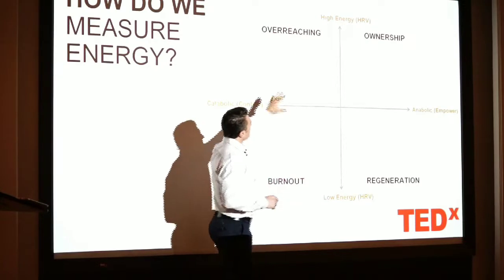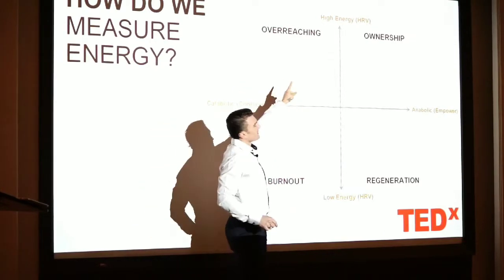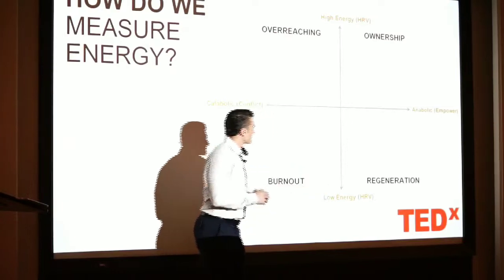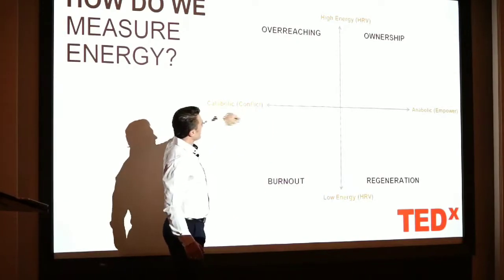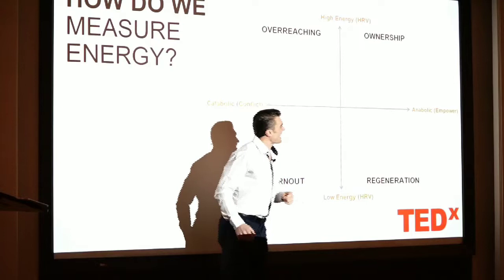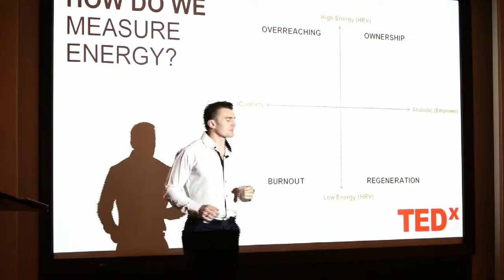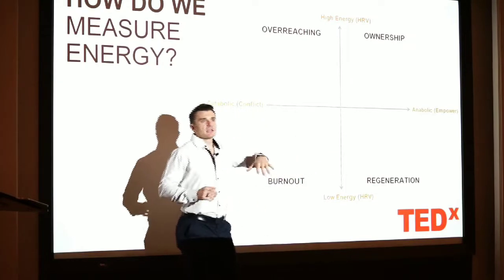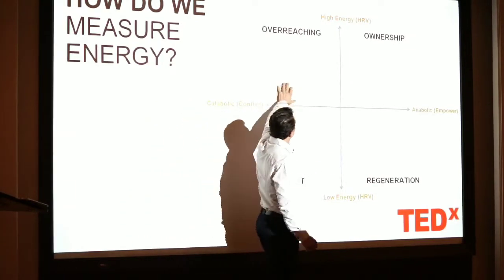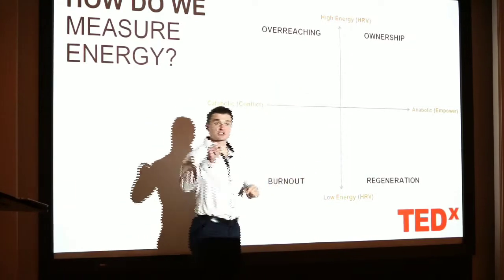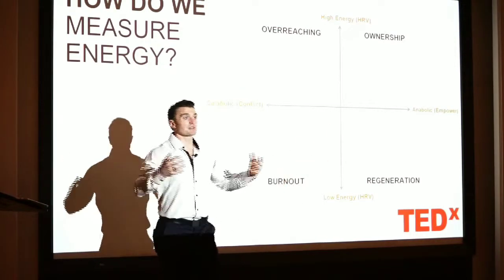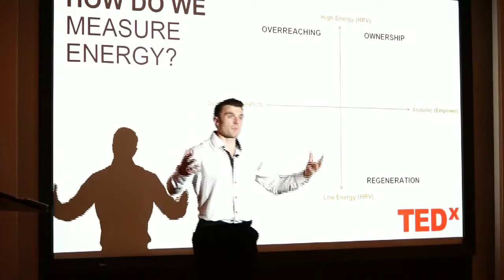If we take a look here at this graph, high energy at the very top being that HRV number, low energy being at the bottom. We have our catabolic conflict energy on the left and our anabolic empowering energy on the right. What we end up finding is that any stimulus we have, we're in the overreaching space, and stress is good. Stress is what makes us grow. Stress is what empowers us. Stress is what allows us to become more resilient.